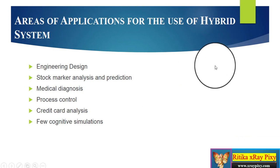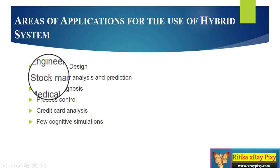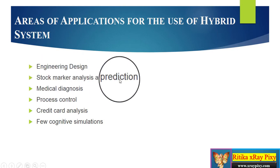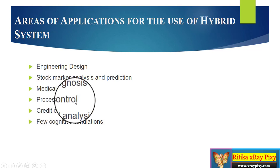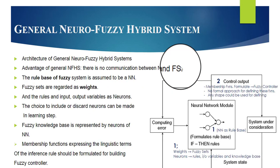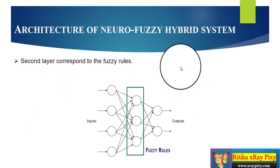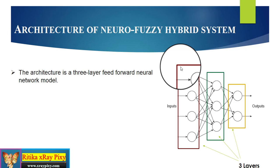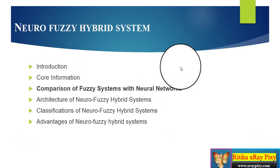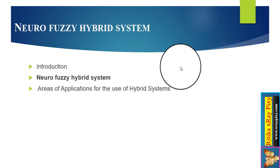Now let's see where we can use the hybrid system. Applications include engineering design, stock market analysis and prediction, medical diagnosis, process control, and credit card analysis. We are combining these technologies together to solve complex problems and create intelligent machines. That's all about this topic — if you have any questions, you can comment below. Thanks for watching.